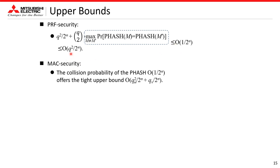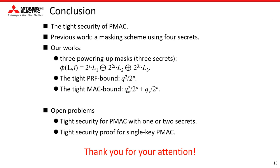So we obtain this upper bound of the PRF security advantage. For the MAC security, using the analysis of the PHASH collision explained in the previous slides, the tight upper bound is obtained. In conclusion, we consider the tight security of PMAC. The previous work uses a masking scheme with 4 secrets; we consider a masking scheme with 3 powering-up masks using 3 secrets, reducing the number of secrets from 4 to 3. We prove that this PMAC has a tight security bound for both PRF and MAC security. An open problem from our work remains. Thank you very much.